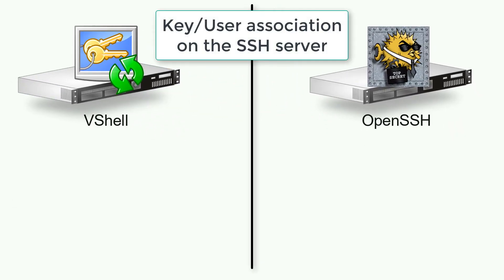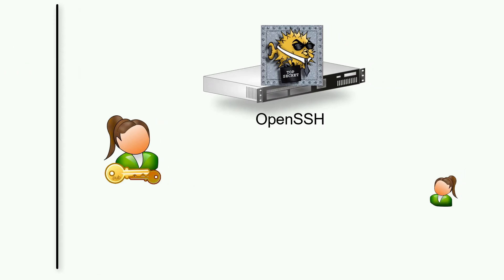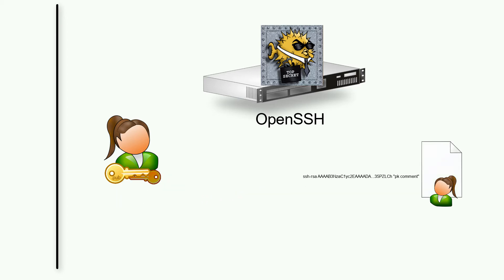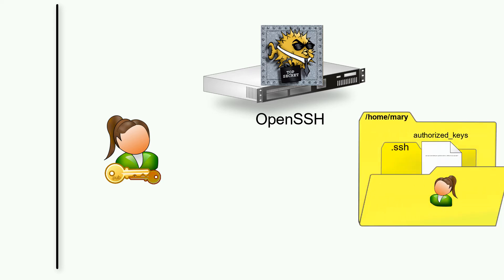Different server implementations have a variety of mechanisms for setting up this association between a Public Key and a user account. In OpenSSH running on Linux platforms, this association is accomplished by placing the contents of the Public Key file in OpenSSH format into a file named authorized_keys located in a folder named .ssh within the user account's home directory.